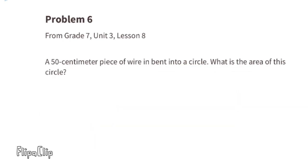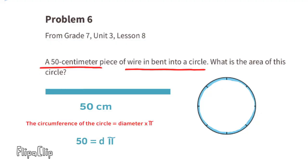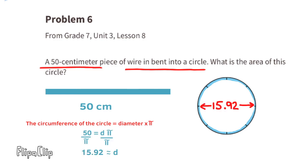Problem number six, from seventh grade unit 3 lesson 8: a 50-centimeter piece of wire is bent into a circle — what is the area of this circle? Since the circumference equals diameter times pi, we have 50 equals diameter times pi. Dividing both sides by pi, we get d equals 50 divided by pi, which is approximately 15.29 centimeters.